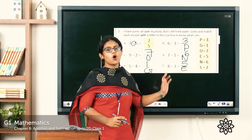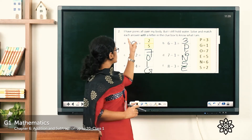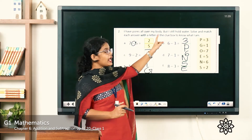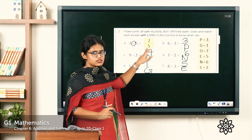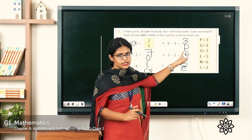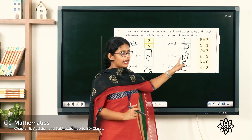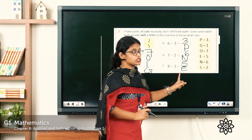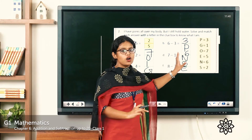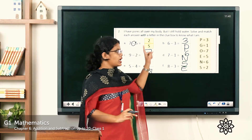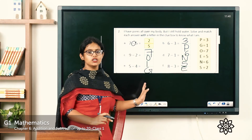There is also a question: solve and match each answer with a letter in the clue box to know what I am. So the letters are: S, P, O, N, G, E — and reading them together we get the word SPONGE. S-P-O-N-G-E, the word is sponge.